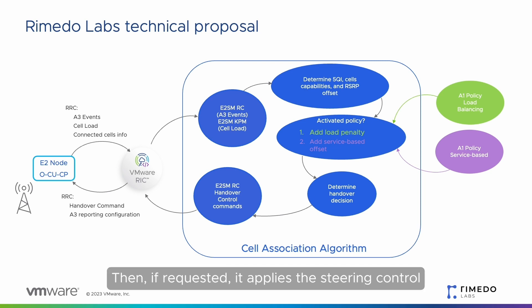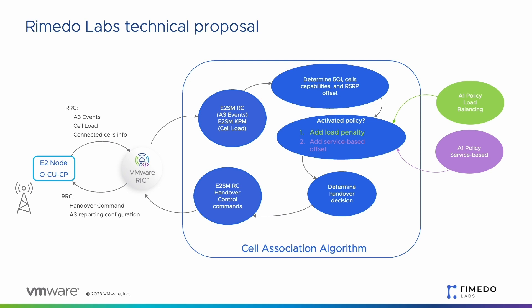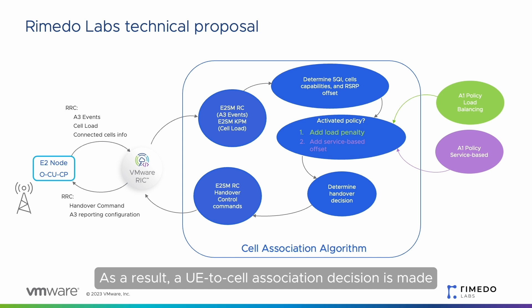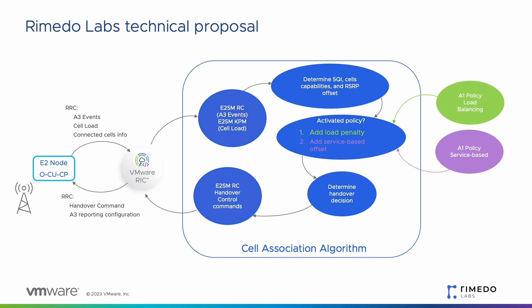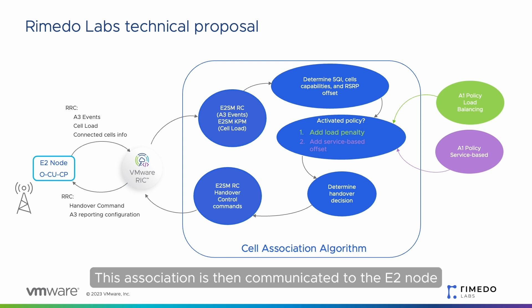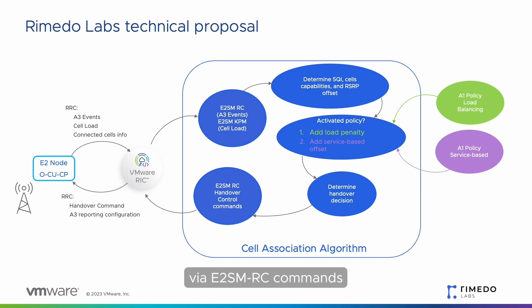Then, if requested, it applies the steering control policies communicated via the A1 interface. As a result, a UE-to-cell association decision is made based on UE metrics, cell capabilities, and current cell load. This association is then communicated to the E2 node via E2 SMRC commands.